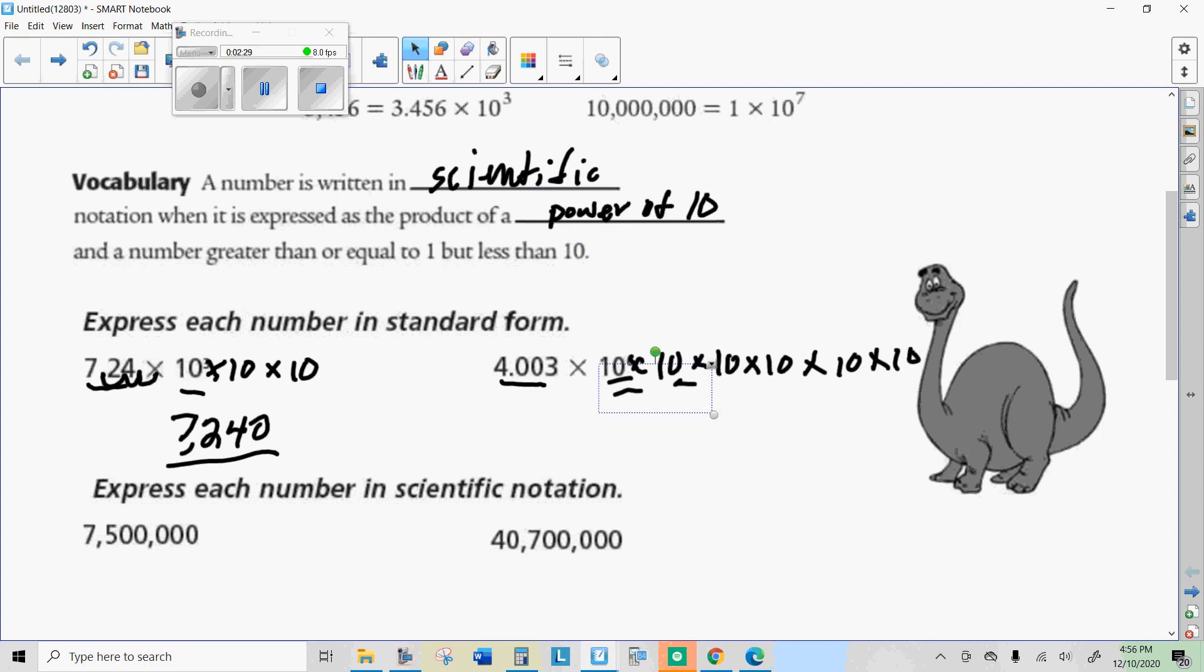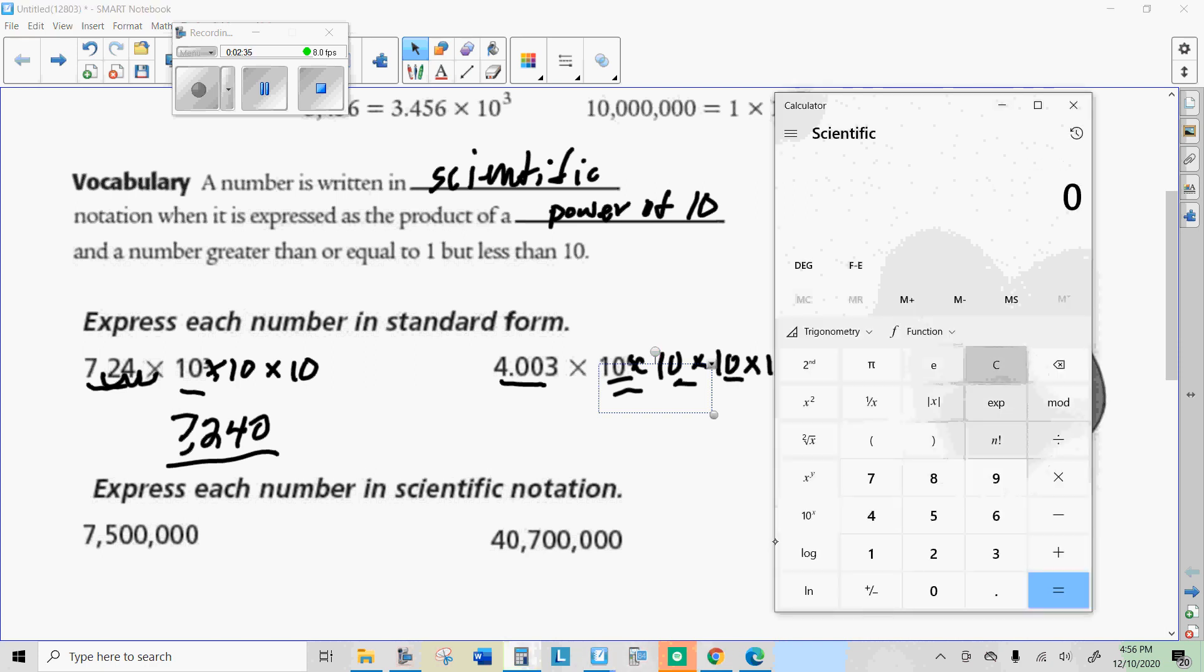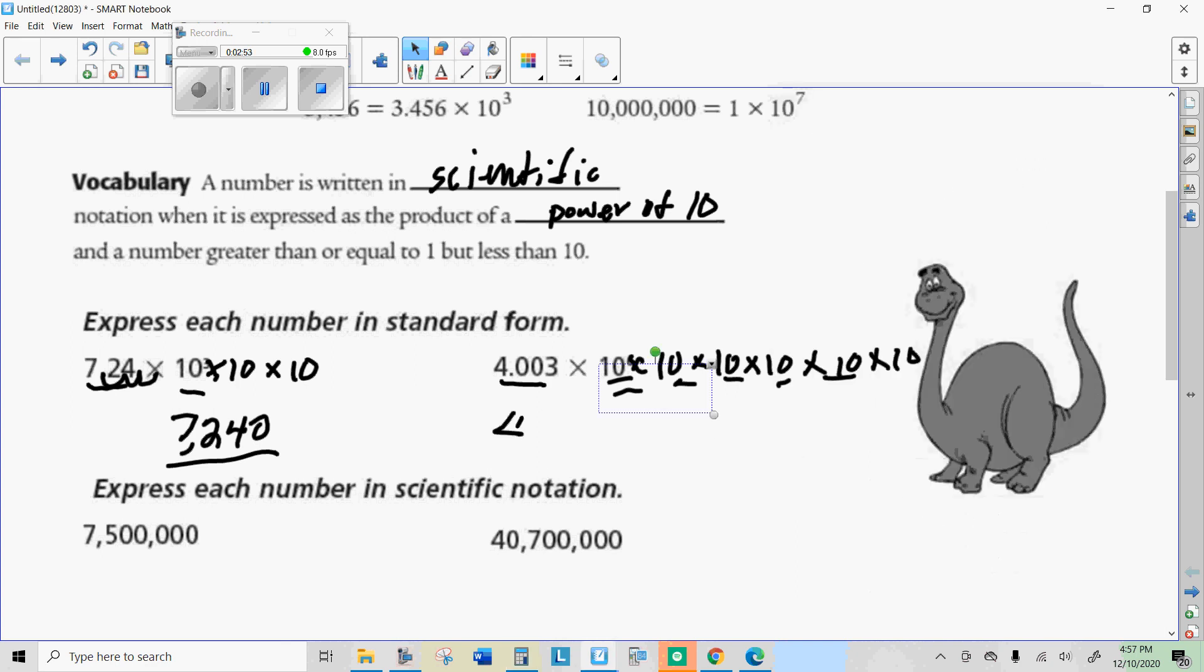On this one, we got to do that 6 times. So we're going to do 4.03 times 10, there's once, twice, three, four, five, six times. So we get 4,003,000.